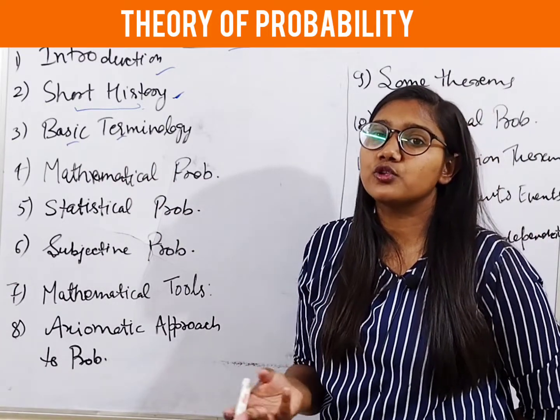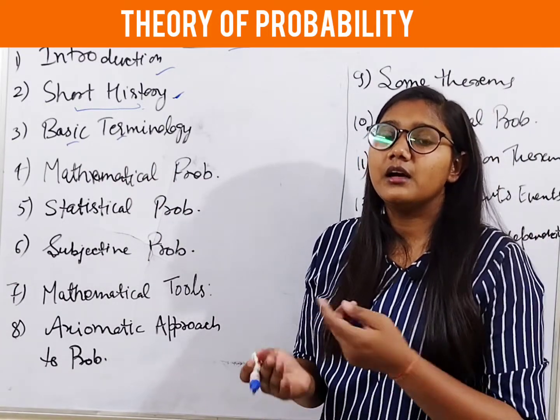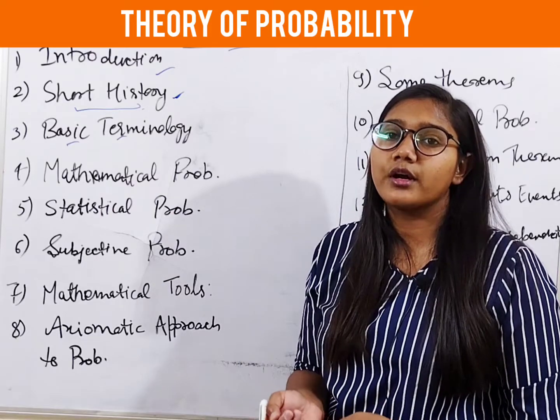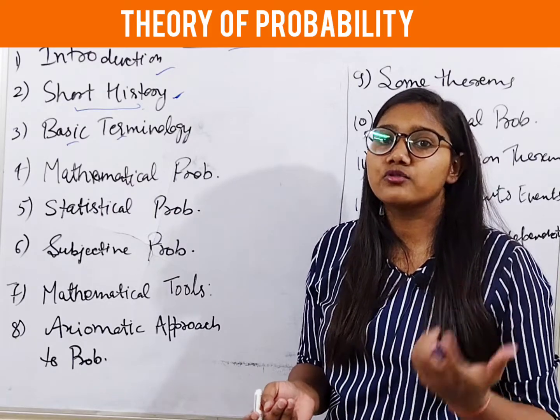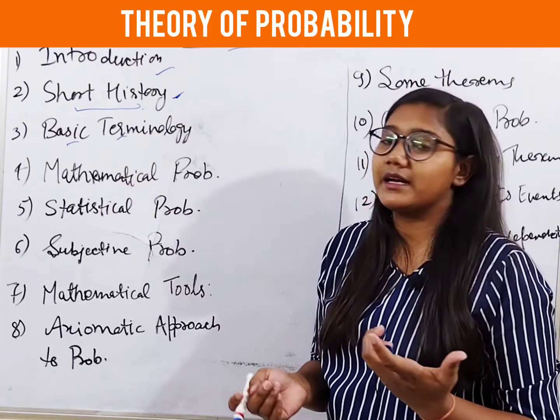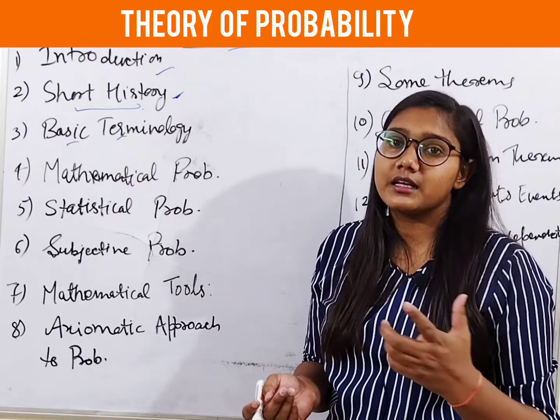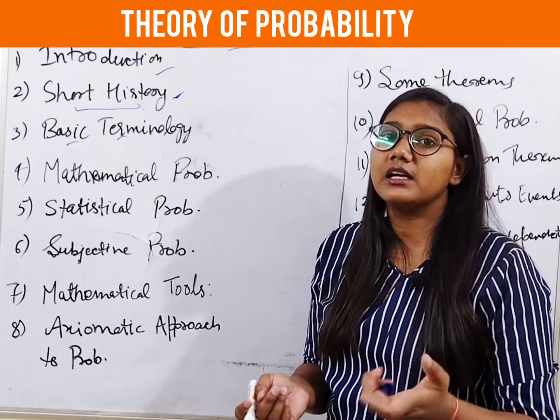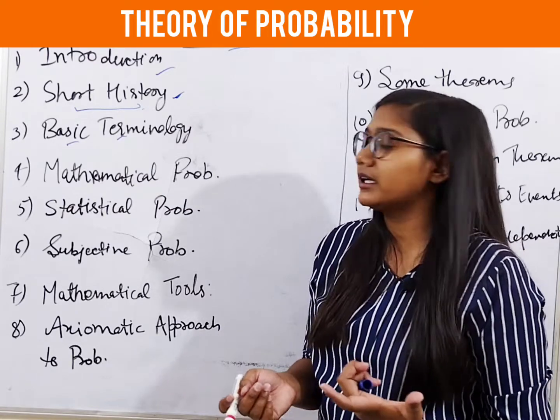The basic probability terms include: random experiment, outcome, mutually exclusive events, trials, and events. These are all the words in our basic terminology that we will cover.